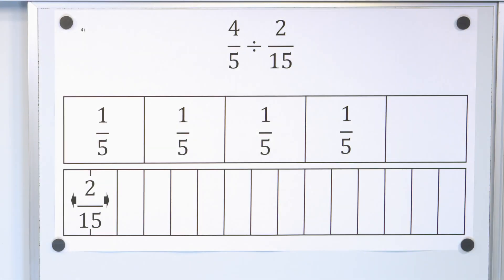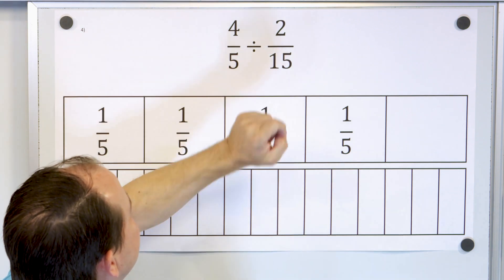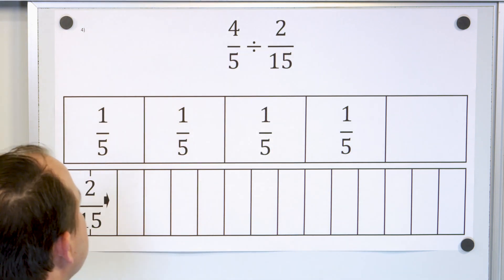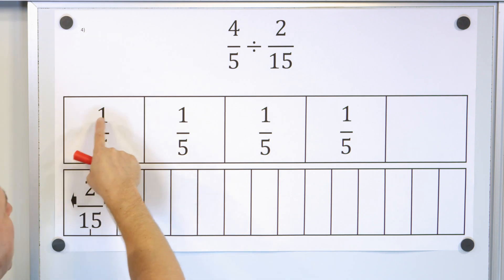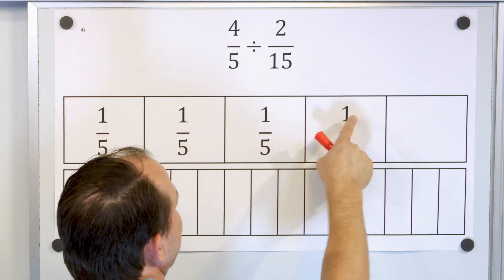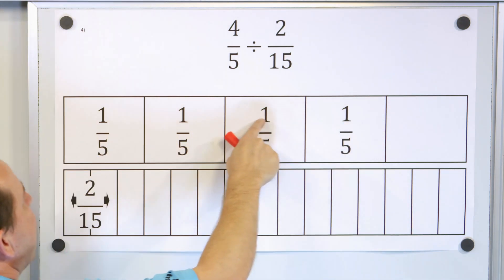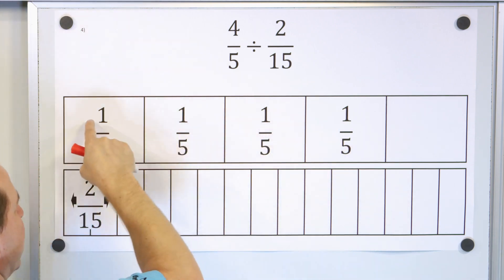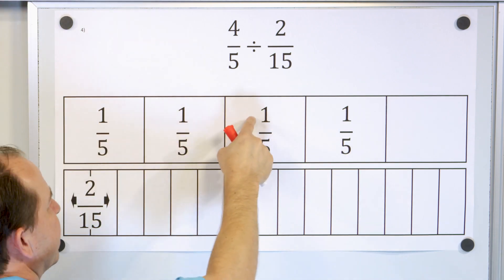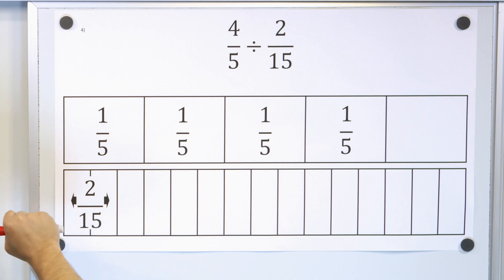For our last two problems, let's take a look at four-fifths divided by two-fifteenths. Here we have five equal slices and we have four of them — so this is what four-fifths looks like: one-fifth, one-fifth, one-fifth, one-fifth — that's four-fifths.